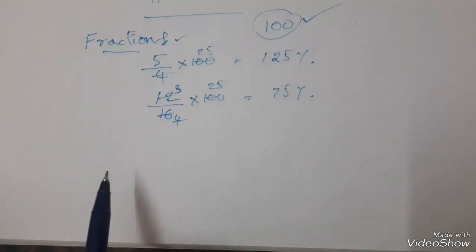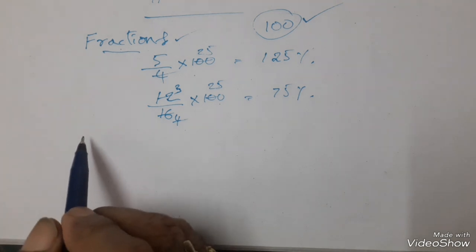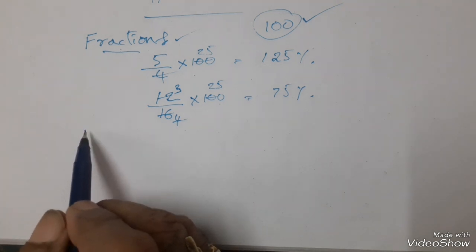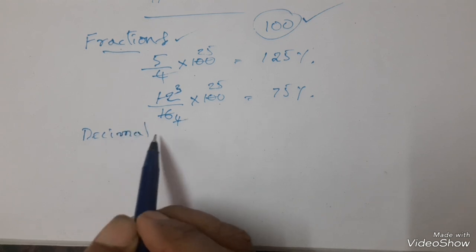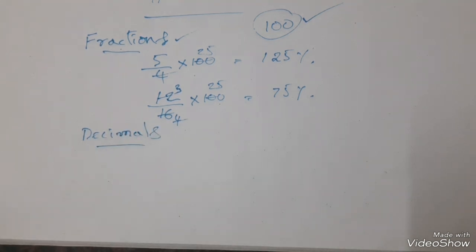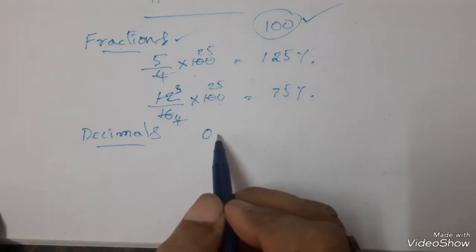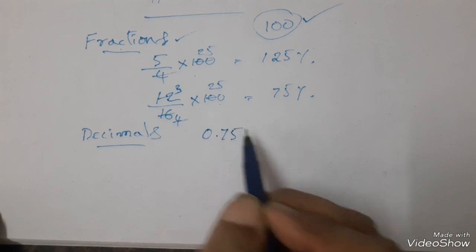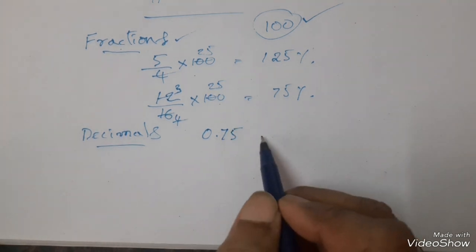Now let us see when you are given a decimal. How can you convert into percentages? For example, 0.75 — how can you convert into percentage?